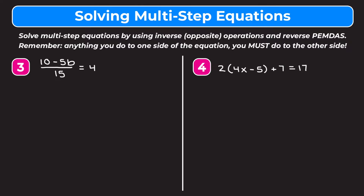Example 3 is the quantity of 10 minus 5b over 15 equals 4. I'll put parentheses around the numerator to remember it should be done last. Using reverse PEMDAS we get rid of the 15 being divided first. Rewriting the equation: 10 minus 5b over 15 equals 4. Since 15 is being divided, the inverse is to multiply by 15 on both sides. On the left the 15s cancel, leaving 10 minus 5b. On the right 4 times 15 is 60.